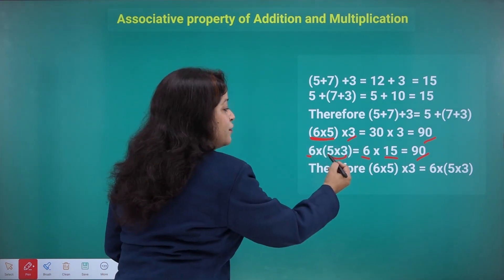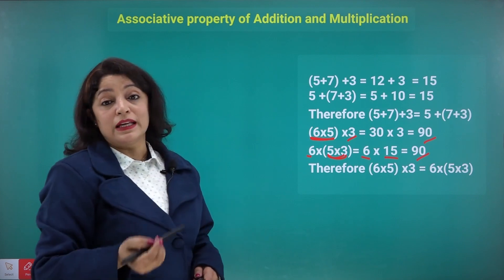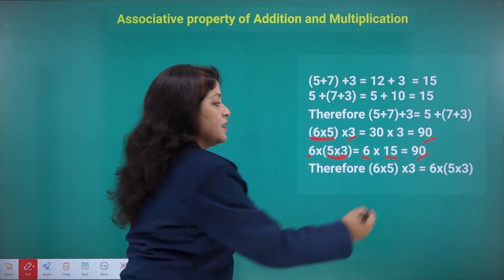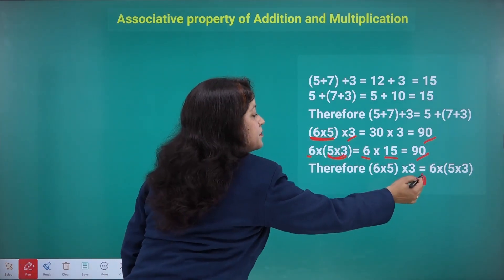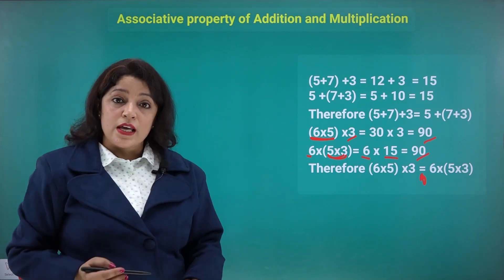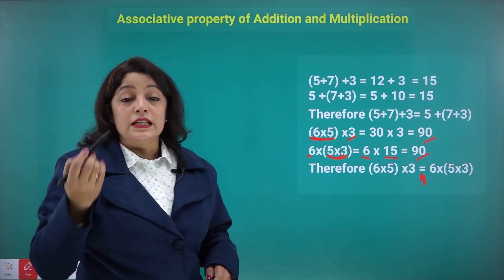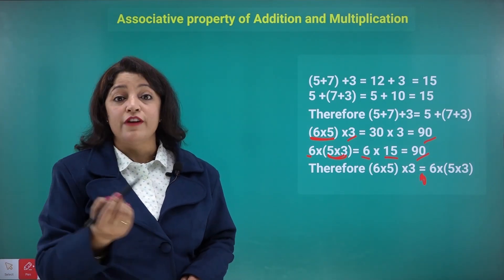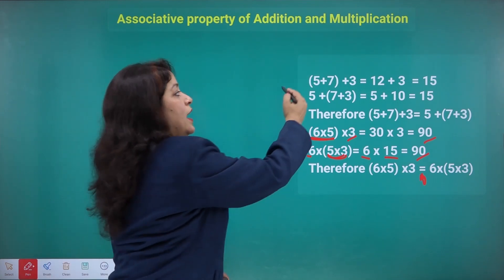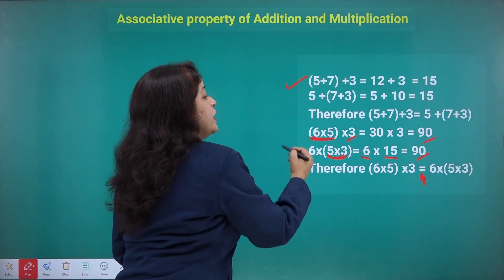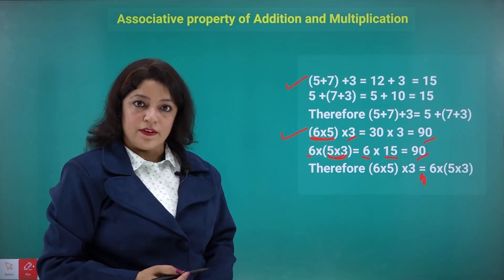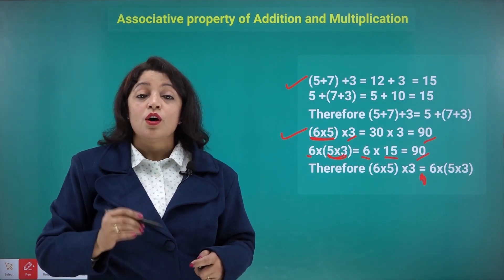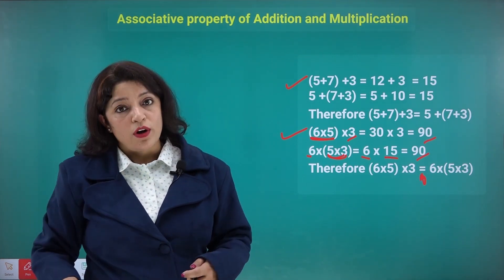You may first multiply 6 and 5 then multiply the result by 3, or you may first multiply 5 and 3 and then multiply the result by 6 — the result will still remain the same. So we say numbers can be associated in any order when doing addition and when doing multiplication.